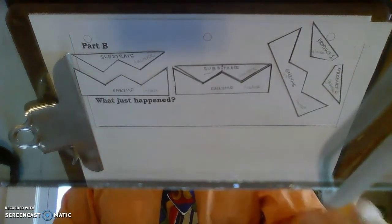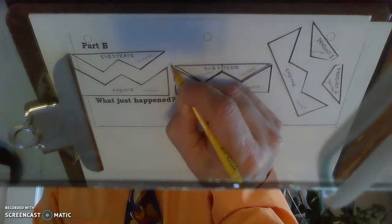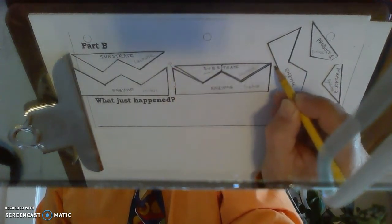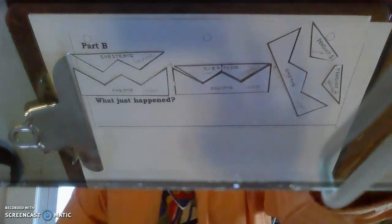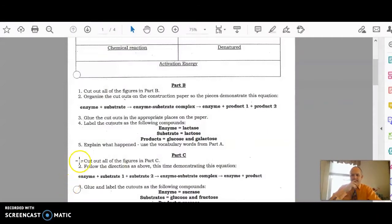So then everything's labeled, right? Probably want to put little arrows in between, kind of showing the story as it is. So then once that's all glued down and labeled, the next thing you've got to do is describe what happened. Use the vocabulary words from part A. So what happened?